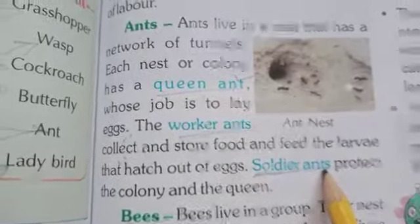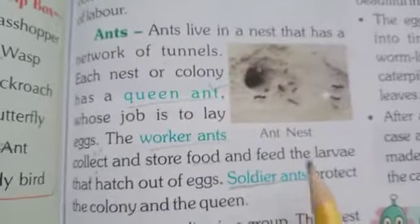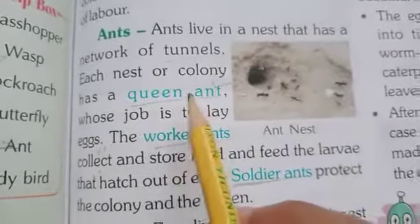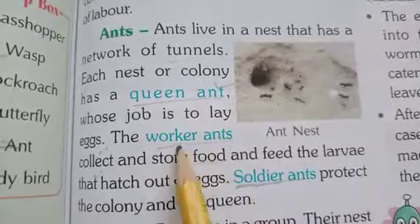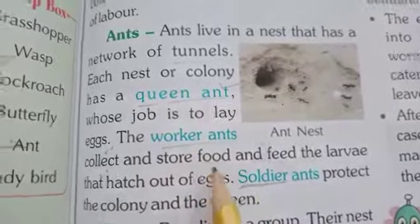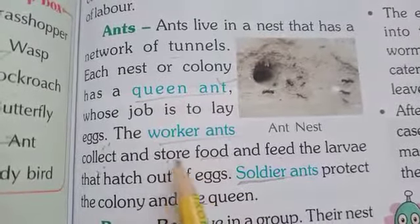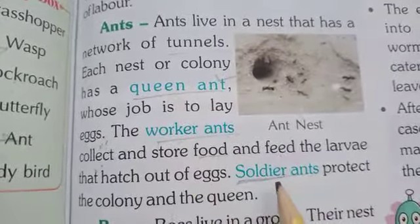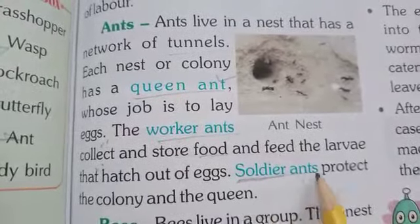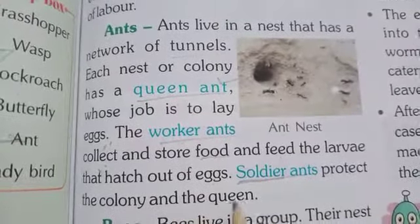So to summarize: queen ants lay eggs, worker ants collect and store food and feed the larvae, and soldier ants protect the colony and the queen.